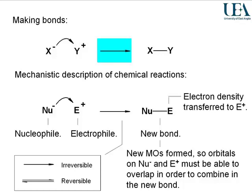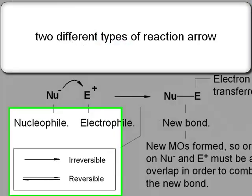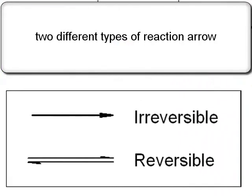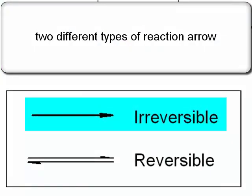And for this reaction arrow, strictly speaking, that form of reaction arrow is representing an irreversible chemical change. One which has a strong driving force and is going in only one direction.